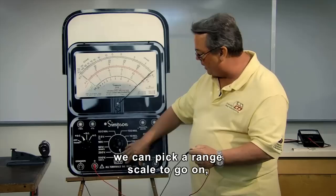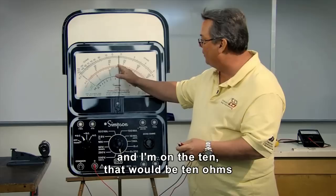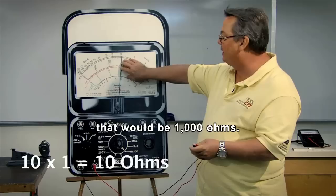we can pick a range scale to go on depending on what we think that ohmic value is. We have R times one. So if I came up to here and I'm on the 10, that would be 10 ohms when I'm on R times one. If I was R times 100, that would be a thousand ohms.